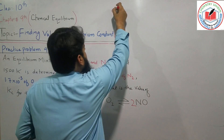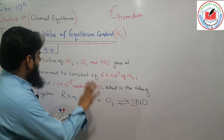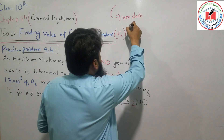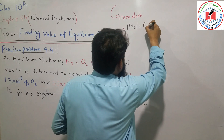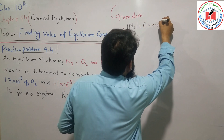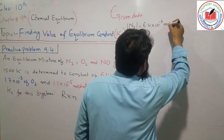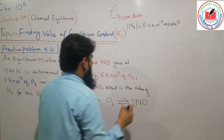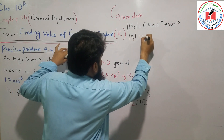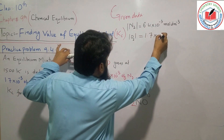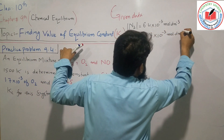The given data: nitrogen concentration is 6.4×10⁻³ mol/dm³, and oxygen concentration is also given in mol/dm³.